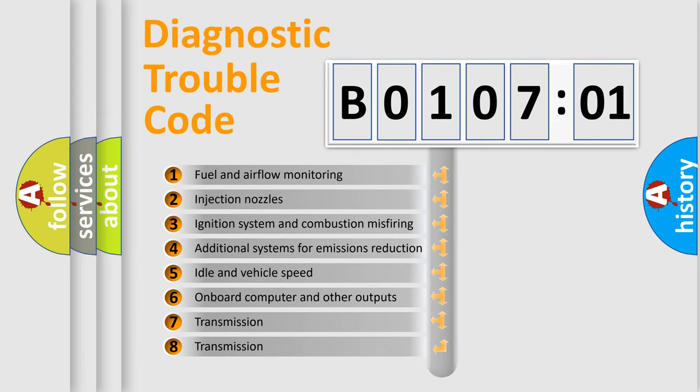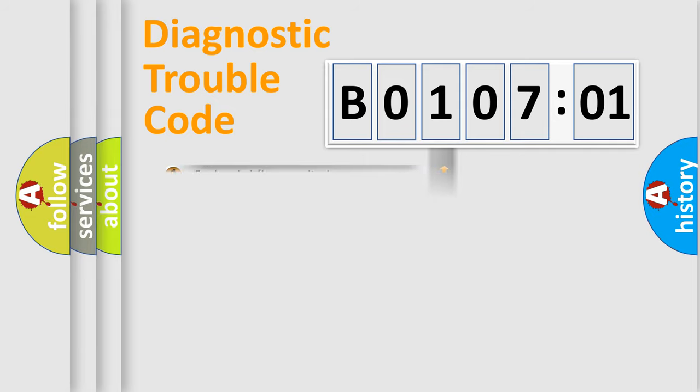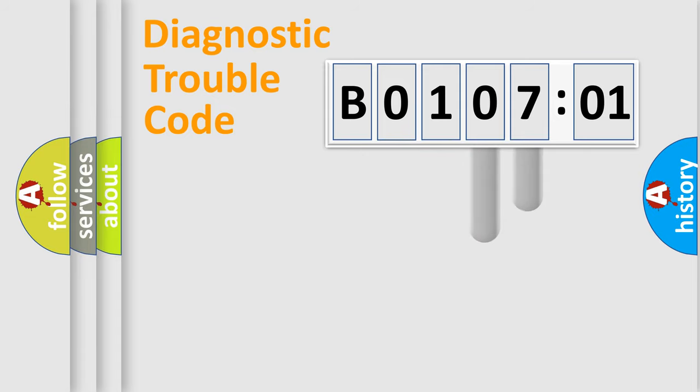The third character specifies a subset of errors. The distribution shown is valid only for the standardized DTC code. Only the last two characters define the specific fault of the group.